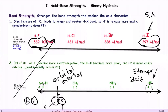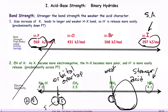On the other hand, if you have hydrogen and iodide, because of the incompatibility in size, the orbital overlap is very small, which makes that a very weak bond — and therefore a very strong acid.